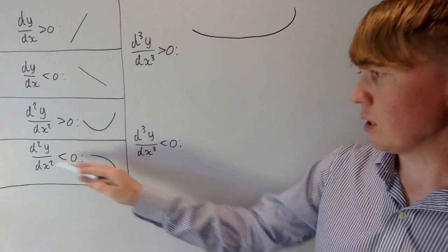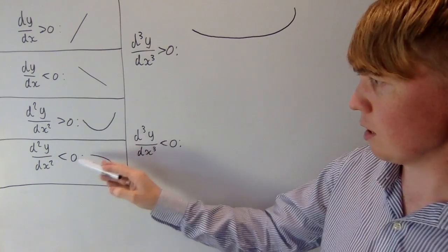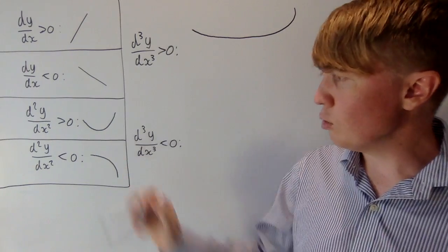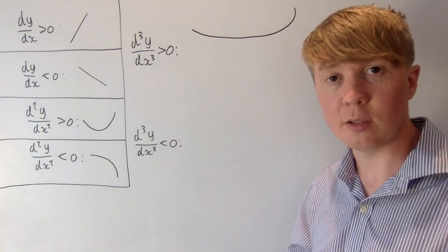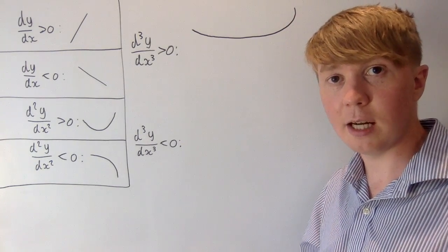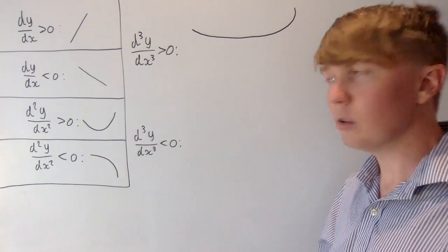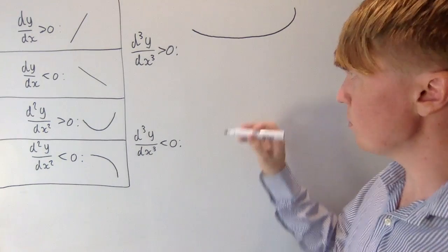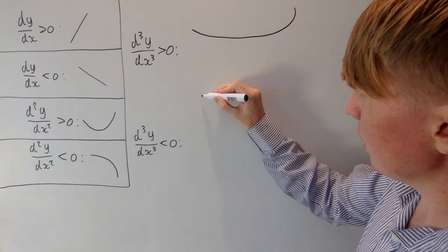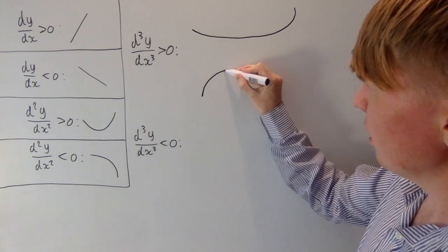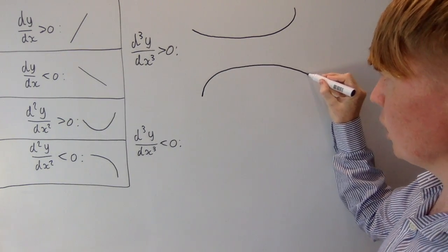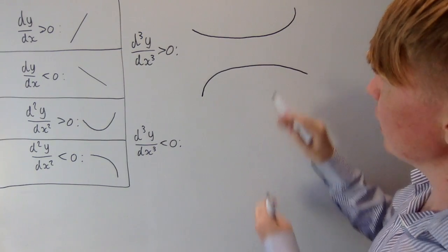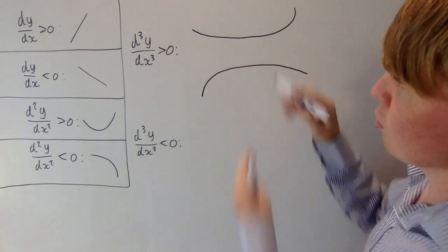If we were decelerating — so the second derivative was negative, our acceleration was negative — but the third derivative was positive, then numerically perhaps our acceleration is minus 10, then goes up to minus 9, minus 8, and so on. The absolute value of the acceleration would actually be getting smaller, so it would seem like we're accelerating a lot at the beginning and then levelling off. The function is stretched out towards the right here, and here it's stretched out towards the left.